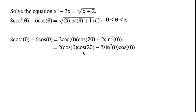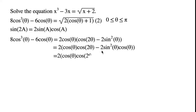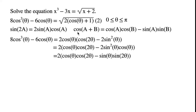We can write the remaining term involving minus 2 sine squared theta cosine theta using the double-angle formula sine 2a equals 2 sine a cosine a. By applying this formula, minus 2 sine squared theta cosine theta can be written as minus sine theta sine 2 theta. Since cosine(a + b) equals cosine a cosine b minus sine a sine b, cosine theta cosine 2 theta minus sine theta sine 2 theta can be written as cosine 3 theta.